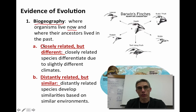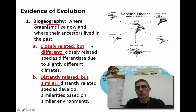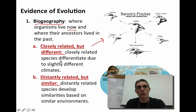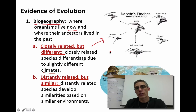We're going to break biogeography down into two different areas. The first is closely related organisms that are somewhat different. Darwin noticed that certain species vary locally — for example, his finches on the Galapagos Islands were very similar to each other but had developed slightly different beaks based on the type of food found on those islands. These organisms have differentiated, usually due to slight climate changes in those localized areas.